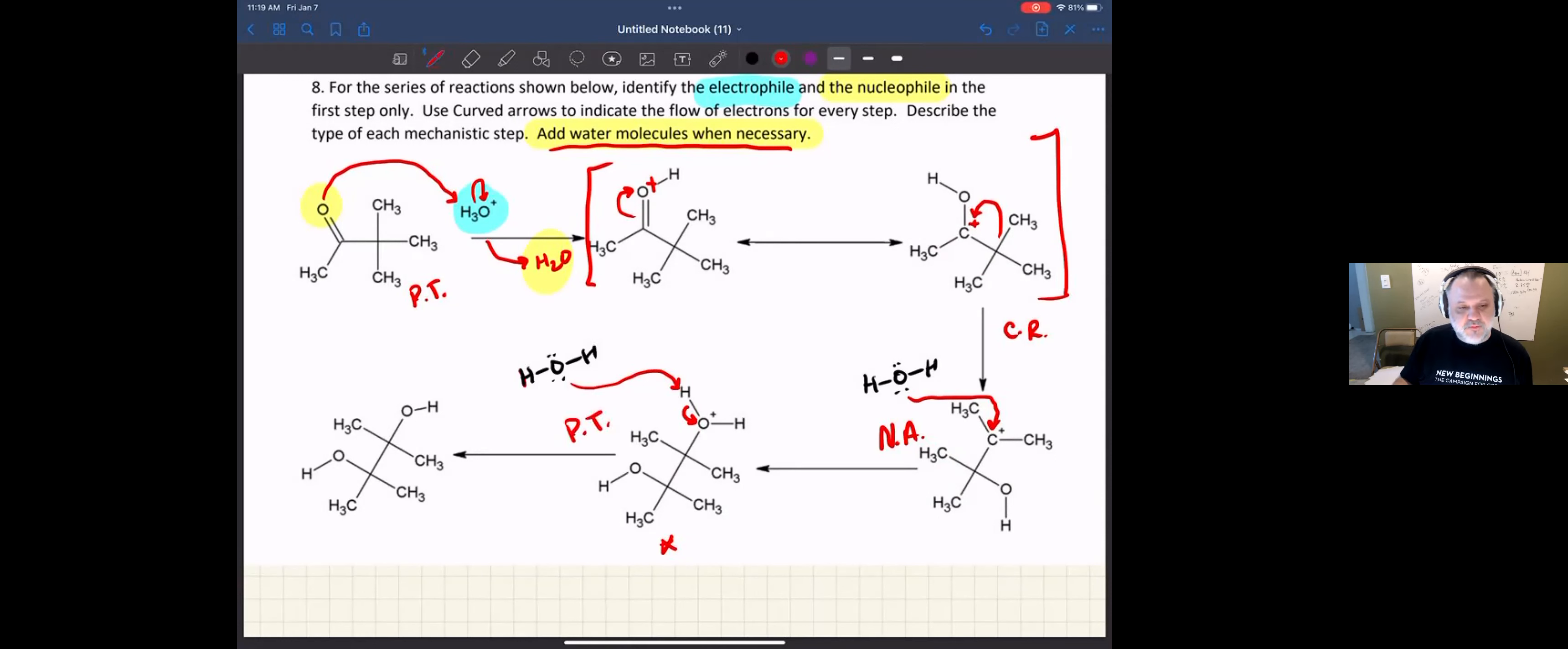And so those are the steps we need to get from reactant to product. We've labeled all the mechanistic steps, and we've identified electrophile and nucleophile.